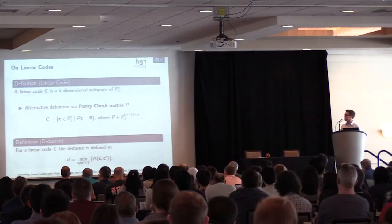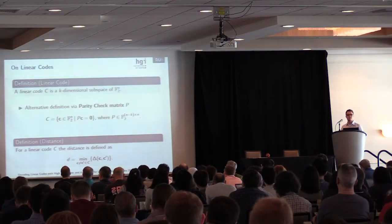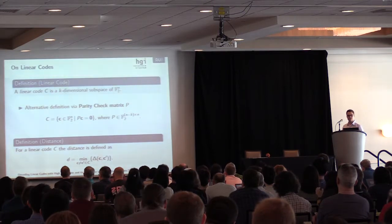And every linear code comes with a distance D, which is defined simply as the minimum Hamming distance of two code words.